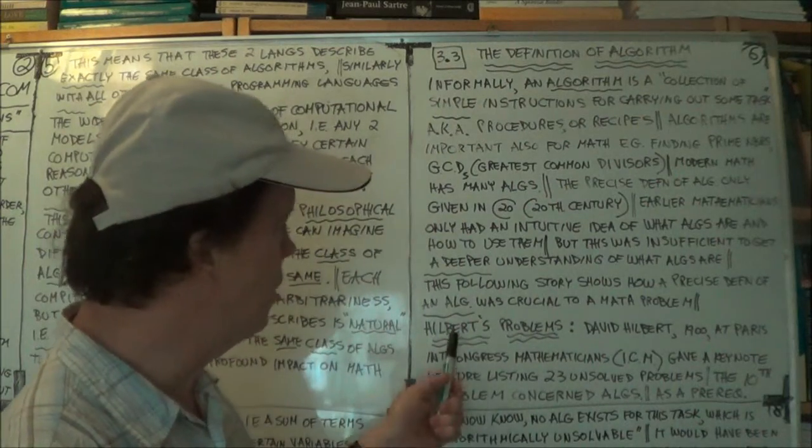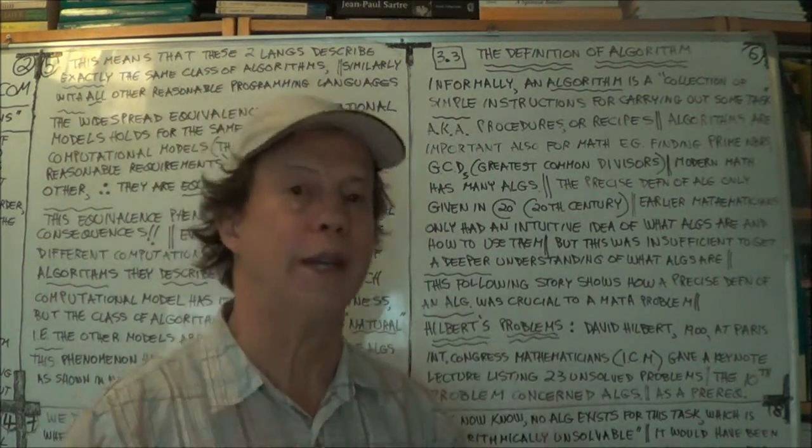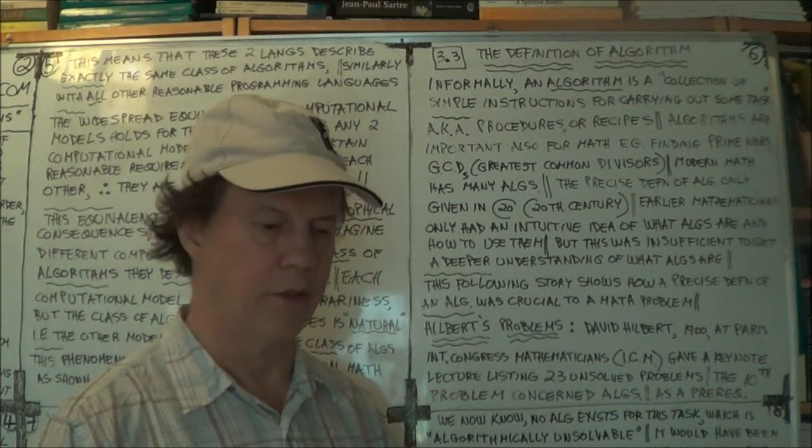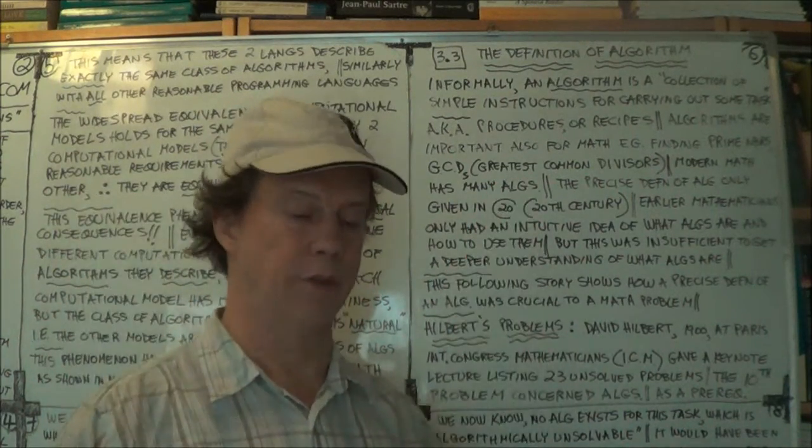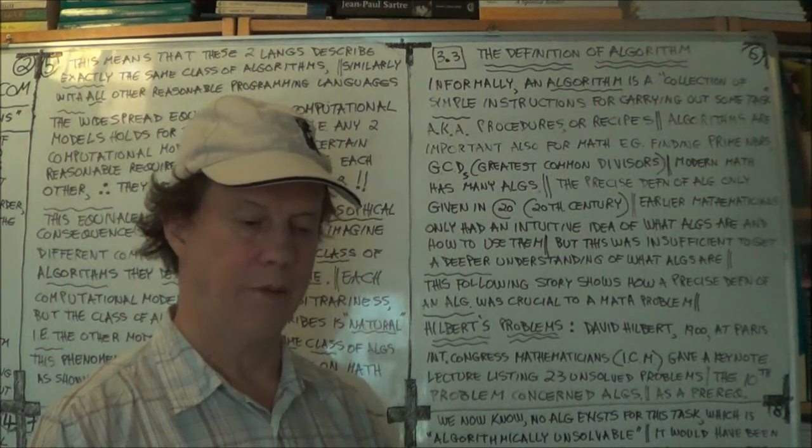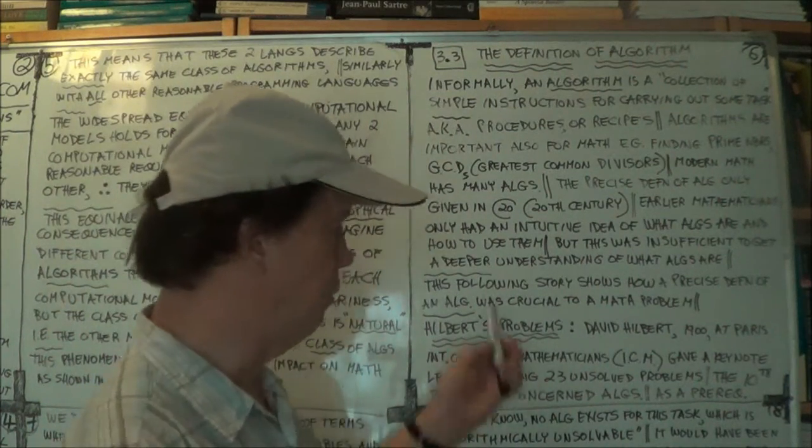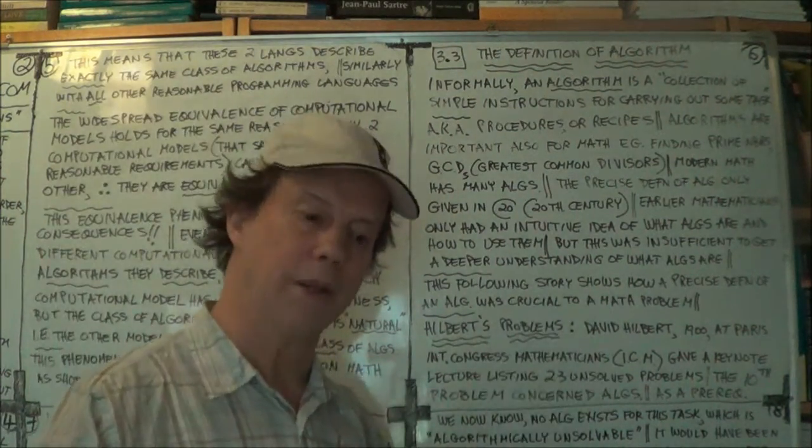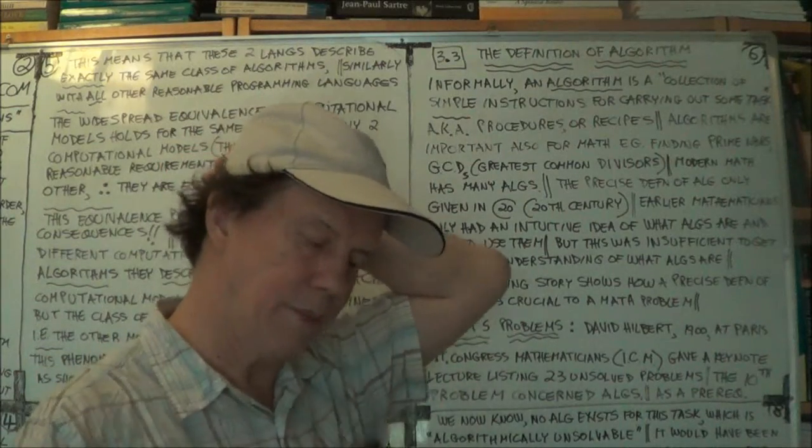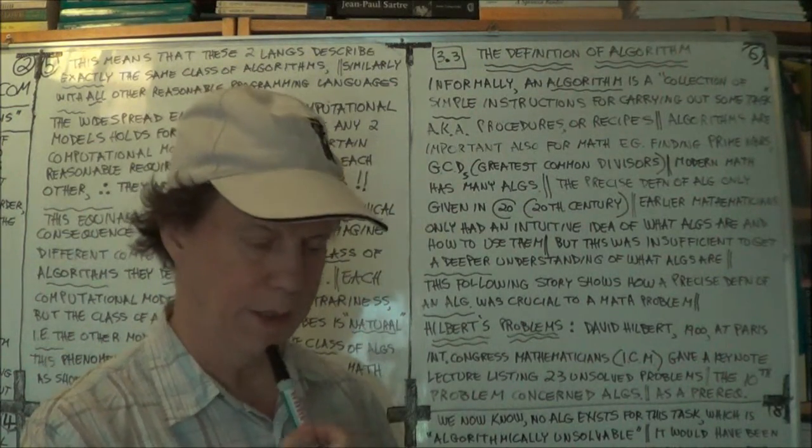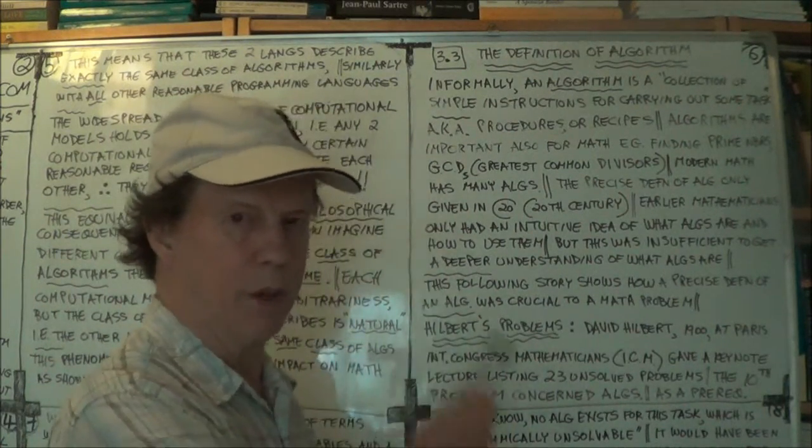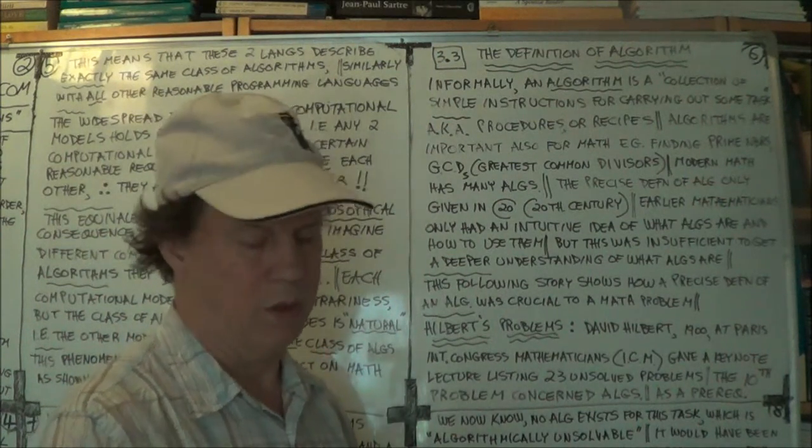All right. So anyway, even someone as brilliant as Hilbert tripped up because he did not have this rigorous definition of what an algorithm was. His intuitive notion of an algorithm made him think that certain things would be possible that in fact weren't. So I'll give you a bit of the history to illustrate this point. The point being that you need this more rigorous definition of what an algorithm is to have insight on why a particular problem he was talking about could not, well, it turned out later.